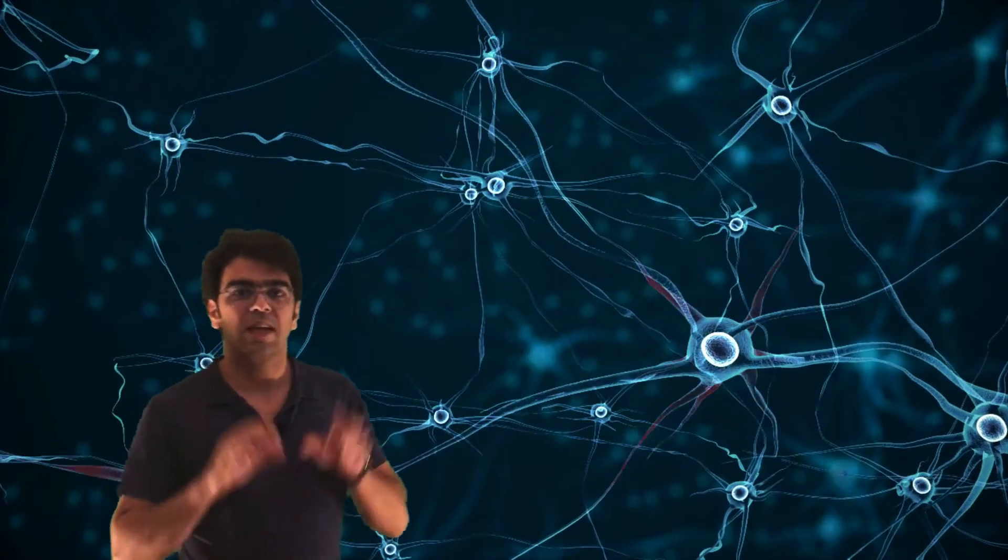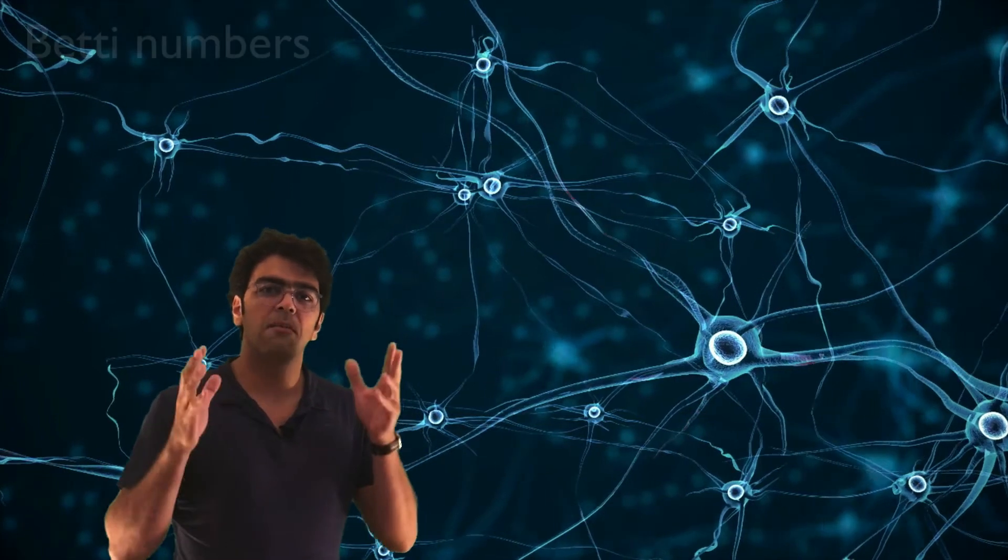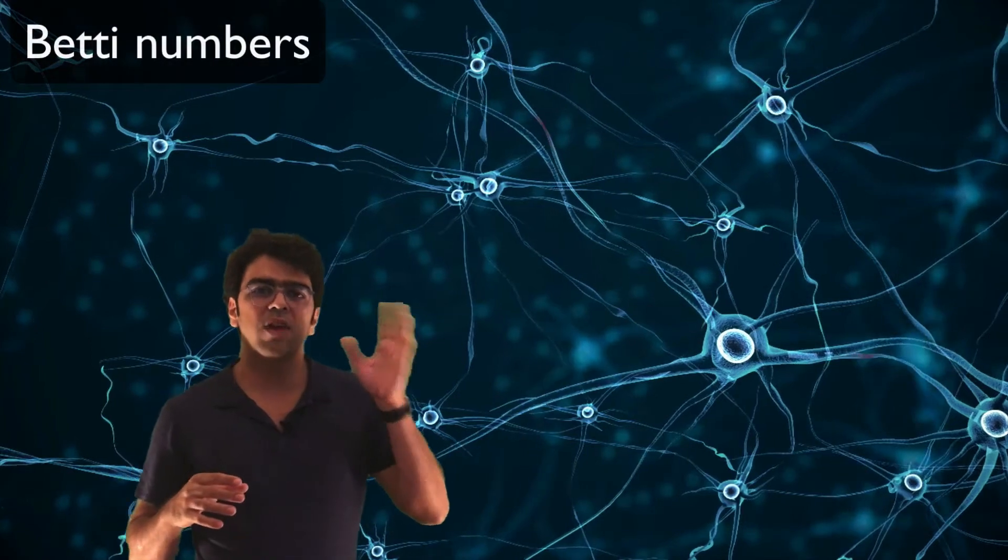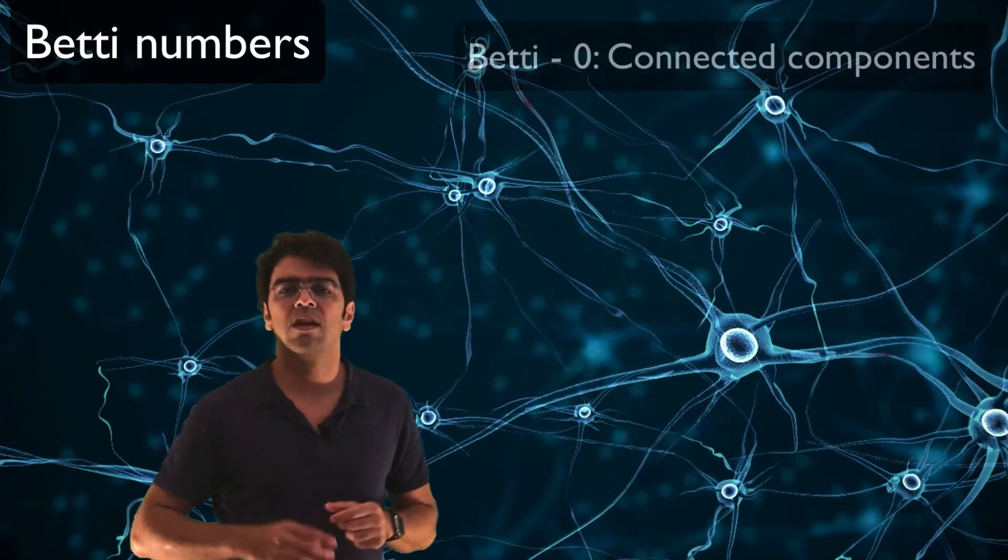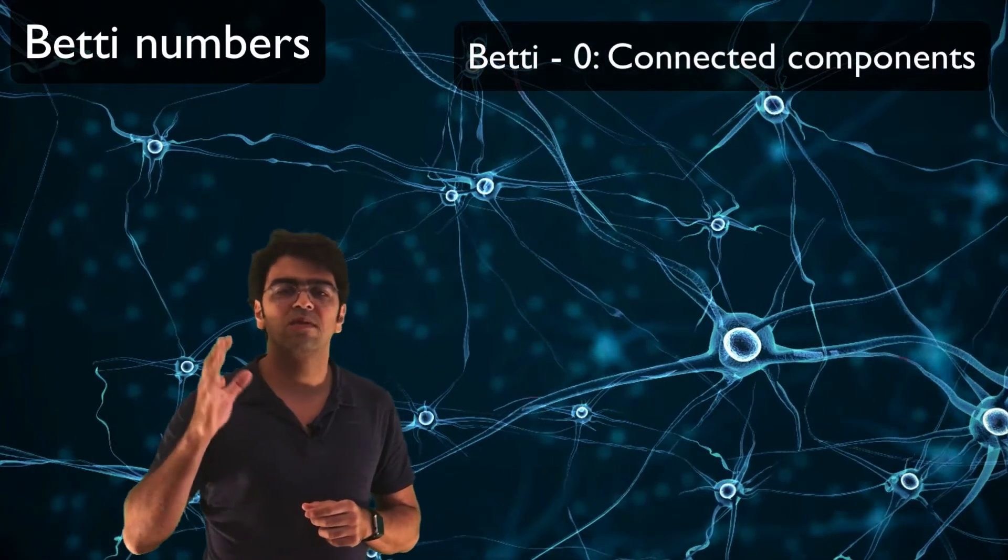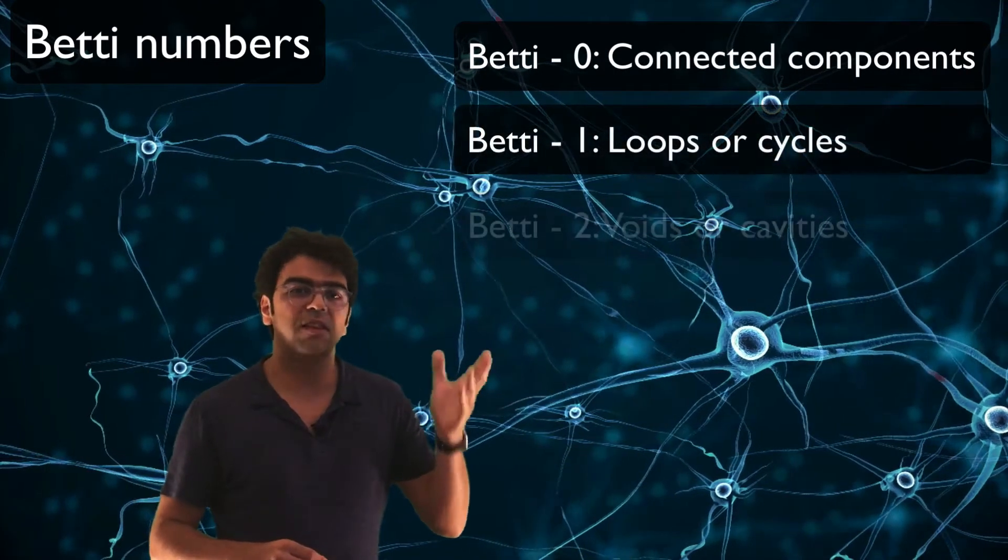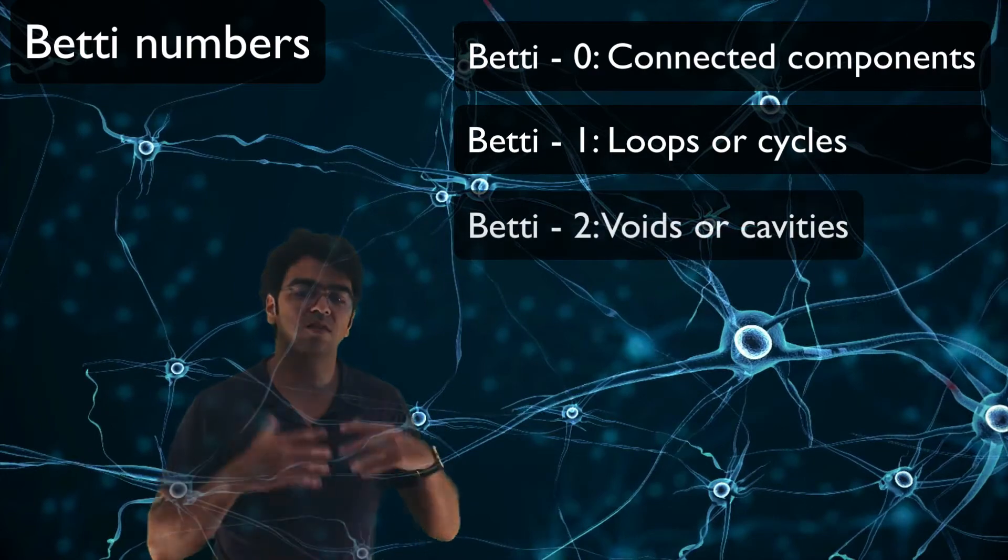In fact, in algebraic topology, those loops are the so-called Betti numbers. That means that Betti zero are the connected components of a network, Betti one are the loops or cycles of a network, Betti two are the cavities or voids of a network, and so on.